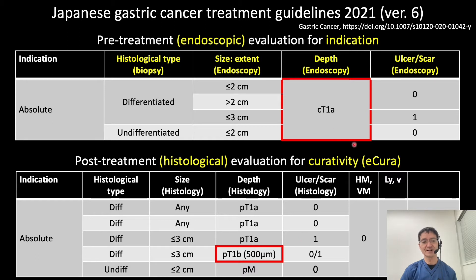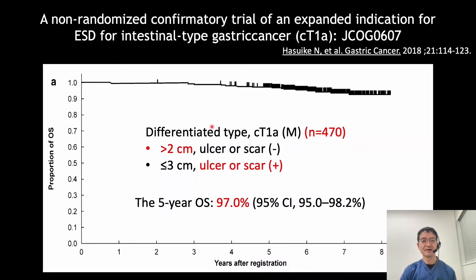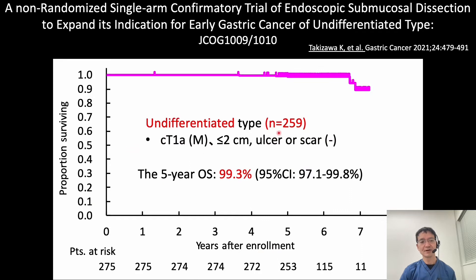Indication of ESD for gastric cancer is all T1A intramucosal. An important change in the latest guideline is that all indications previously called expanded criteria became absolute indications of ESD for gastric cancer, because favorable long-term outcomes were proven for 470 patients with gastric cancer larger than 2 cm or a lesion with ulcer scar, and 259 patients with undifferentiated type cancer, lesion smaller than 2 cm, without ulcer scar.